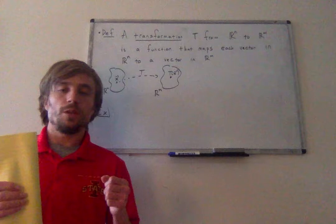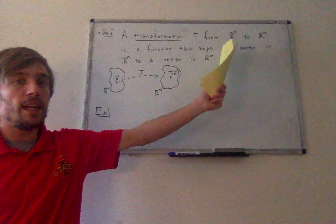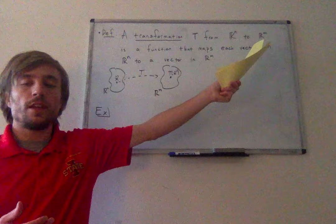So let's jump right in. The first thing I want to define is the idea of a transformation from Rn to Rm. Rn is the set of all vectors of length n, and Rm is the set of vectors of length m.